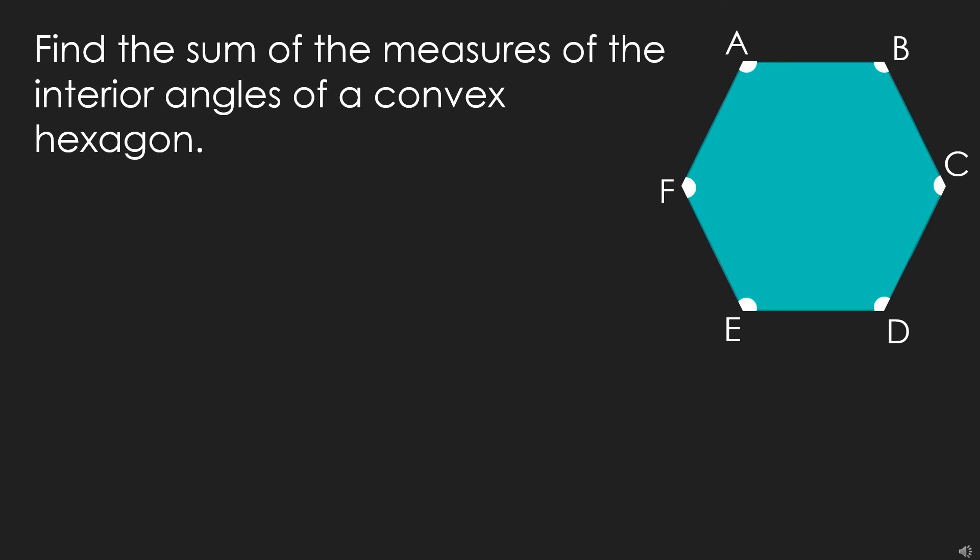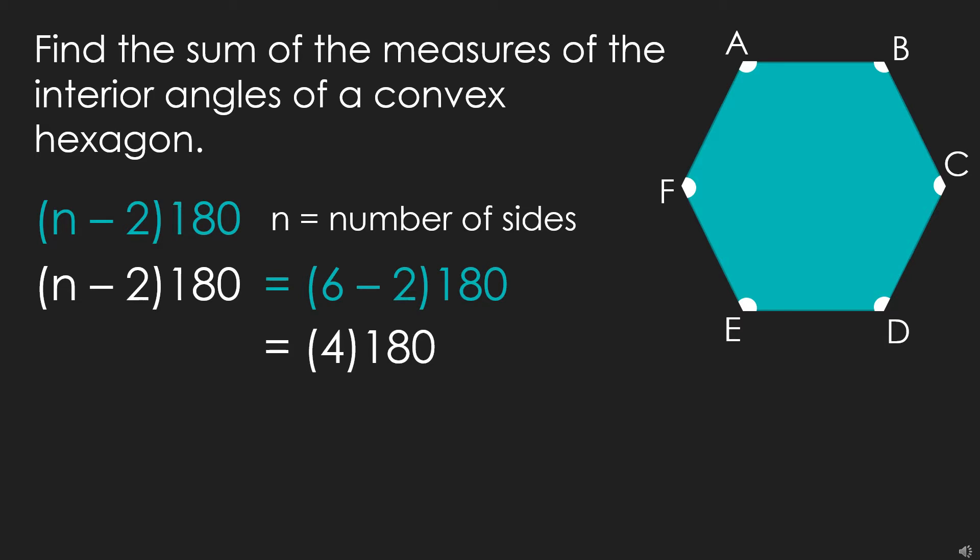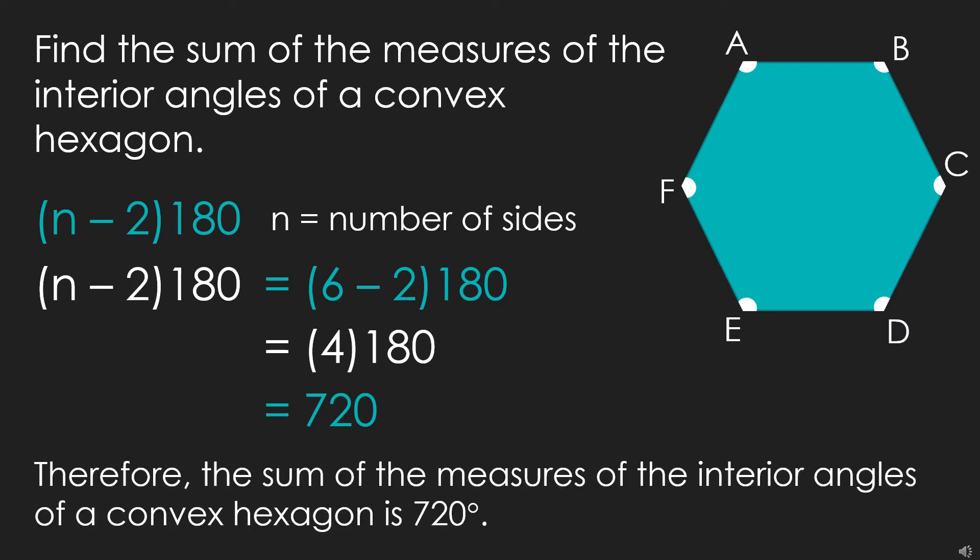In this problem, we need to find the sum of the measures of the interior angles of a convex hexagon. And to solve this, we will use the polygon interior angles theorem, which has a formula of (n - 2) × 180, where n is the number of sides of a polygon. Now, the number of sides of a hexagon is 6, thus n will be replaced by 6. So we have now (6 - 2) × 180. Again, we solve first the parentheses, and 6 minus 2 is 4, and 4 times 180 is actually equals to 720. Thus, the sum of the measures of the interior angles of a convex hexagon is 720 degrees.